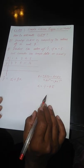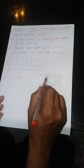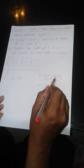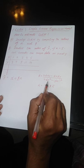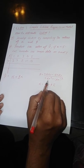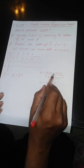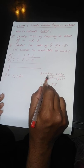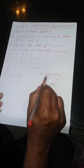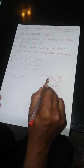Now, what do we require? We require summation xy, summation x, summation y, and summation x squared. Summation x is the Greek letter sigma, which means to sum all the values.